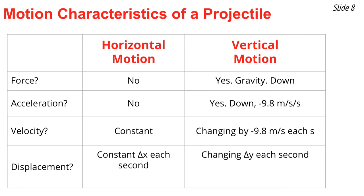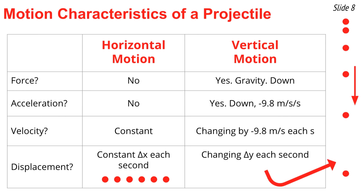If we think about displacement: horizontally, there is a constant change in position each second, as illustrated by an evenly spaced dot diagram. But vertically, there is a changing position each second, reflected in an accelerating dot diagram. Together, these describe the complete motion of a projectile.